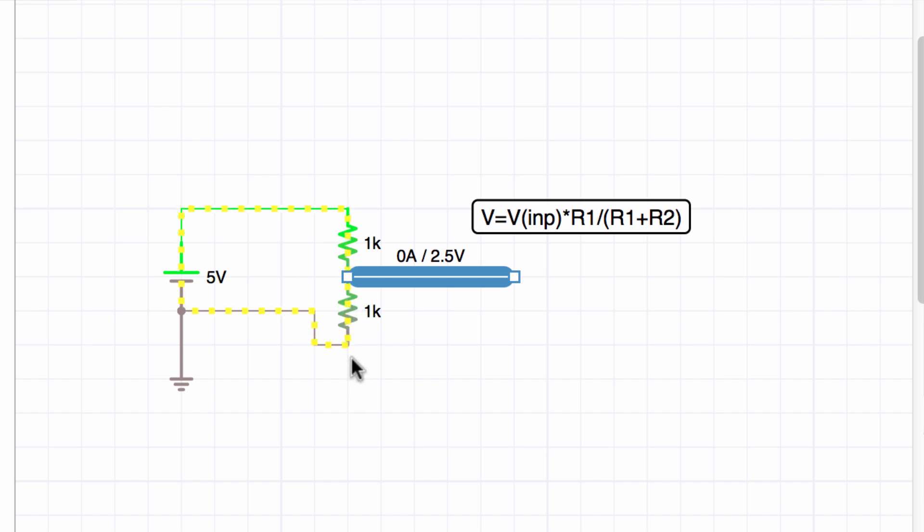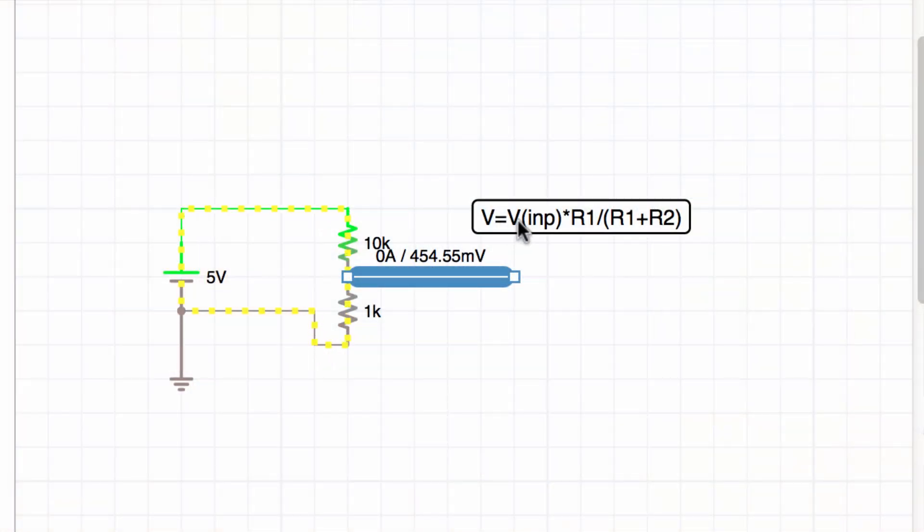So let's exchange this one resistor with a 10 kilo ohm resistor and click on the wire again and bingo we get 0.45 volts exactly like the multimeter shows us. So the formula for that is the output voltage is the input voltage that's coming out of the power rails times the bottom resistor, r1, divided by the sum of both resistors, that's r1 plus r2.